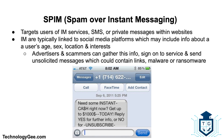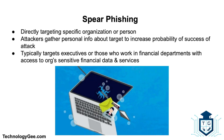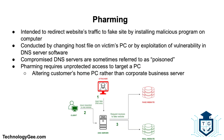Spear phishing involves an attacker directly targeting a specific organization or person with tailored phishing communications. This is essentially the creation and sending of emails to a particular person to make them think the email is legitimate. In contrast to bulk phishing, spear phishing attackers gather and use personal information about their target to increase their probability of success. Spear phishing typically targets executives or those in financial departments that have access to the organization's sensitive financial data and services.